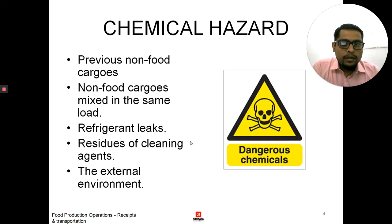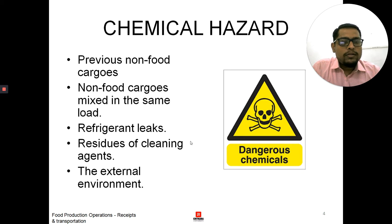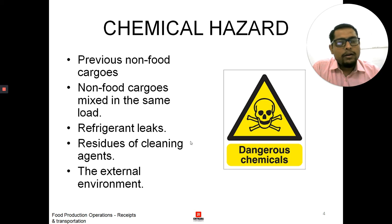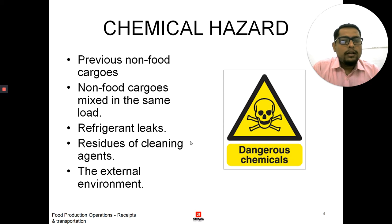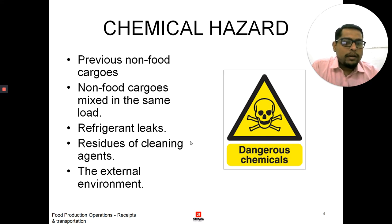The next one is a chemical hazard, which can happen through different ways. The first one is previous non-food cargoes. Suppose a food has been transported in a container which was used for a non-food cargo previously and was not properly cleaned and sanitized. A piece of plastic or a chemical leakage inside the chamber that finds its way inside the food causes a chemical hazard. Non-food cargoes mixed in the same load — those cargoes which are not food-grade and are mixed with the food can contaminate it.